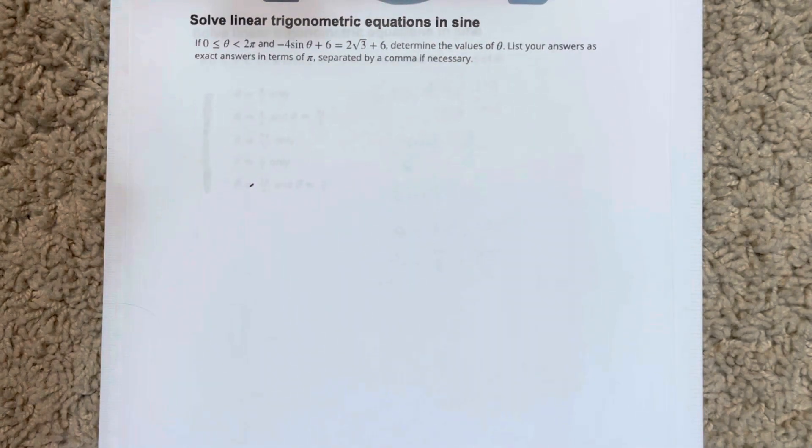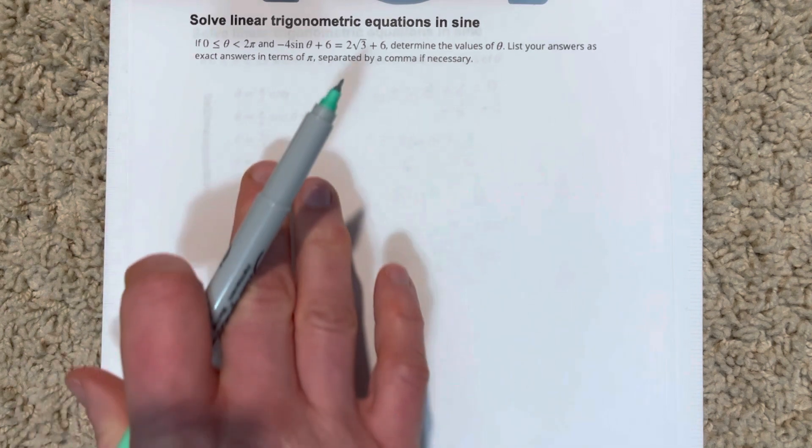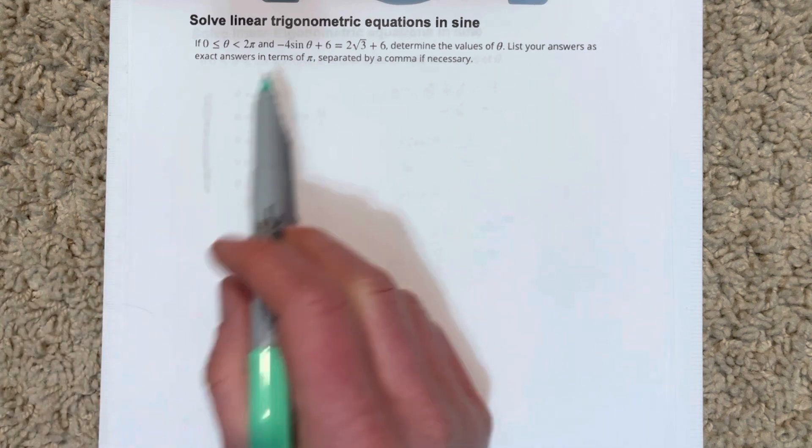In this video, we're going to solve linear trigonometric equations in sine. If 0 ≤ θ < 2π, within one revolution on the unit circle, and -4sin(θ) + 6 = 2√3 + 6, determine the values of θ. List your answers as exact answers in terms of π, meaning they want that in radians.